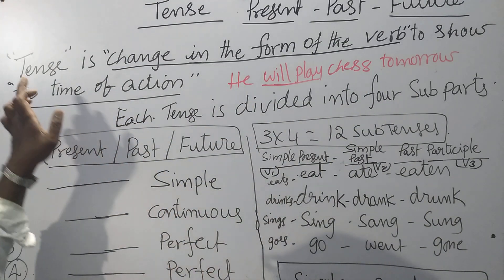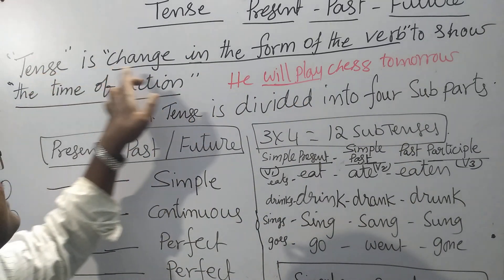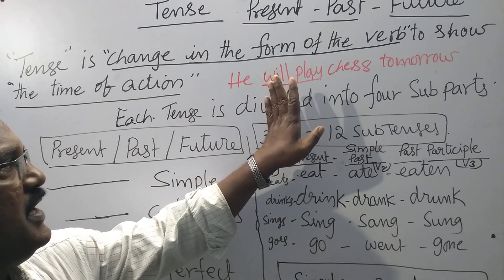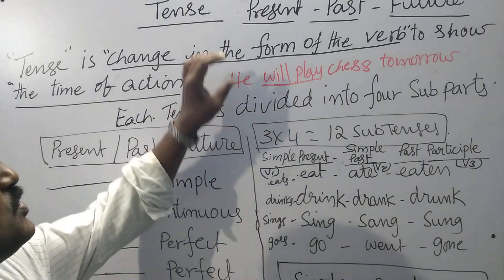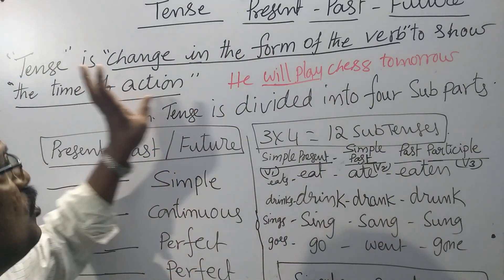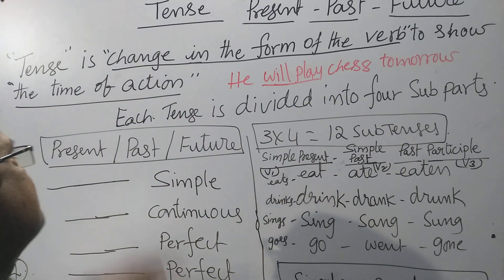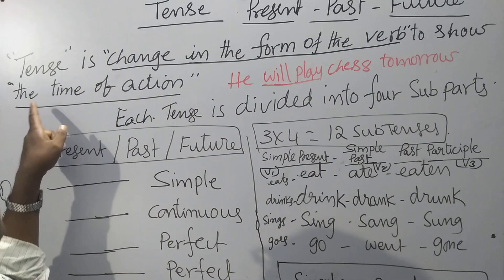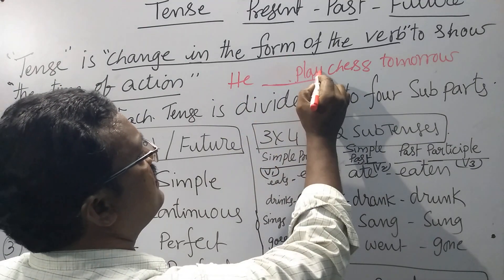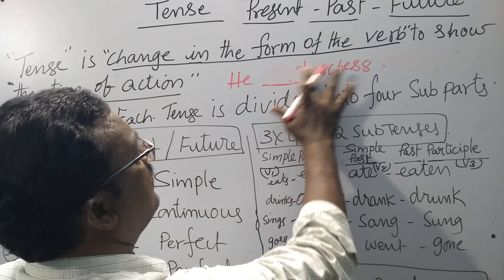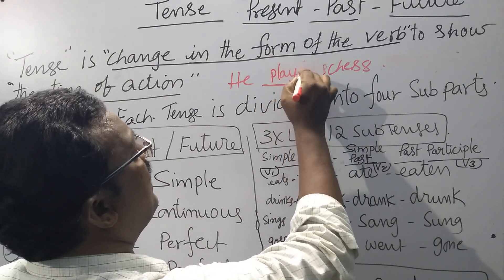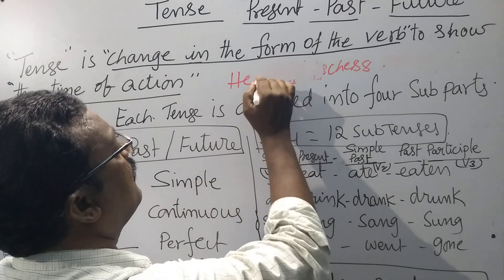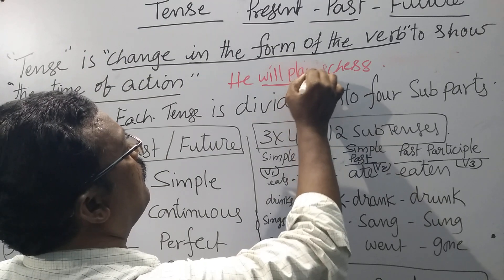This verb expresses simple future. So, according to the definition, tense is a change in the form of the verb. Previously: plays — present tense; played — past tense; will play — future tense. Basing upon the verb, we can decide the tense of the sentence. That's why tense is a change in the form of the verb to show the time of the action.